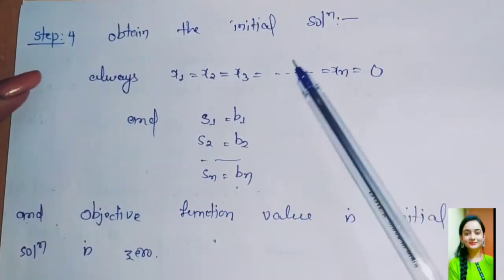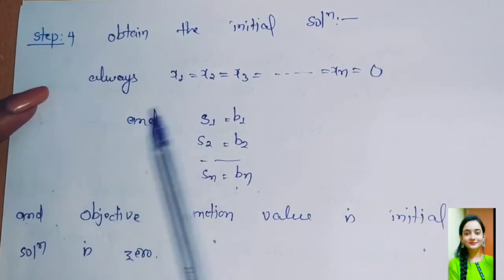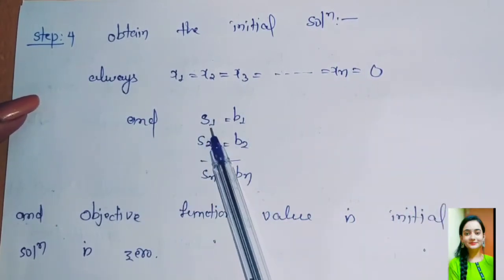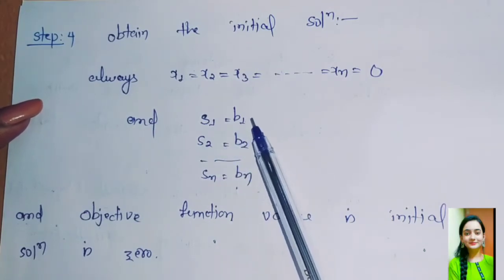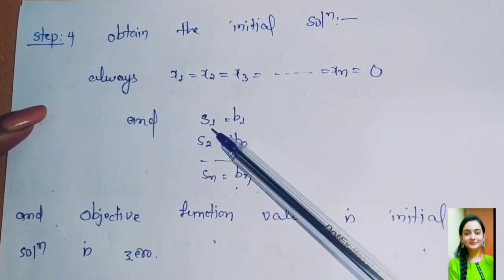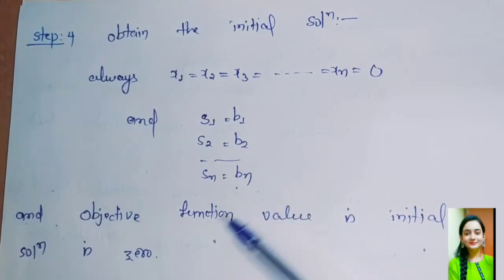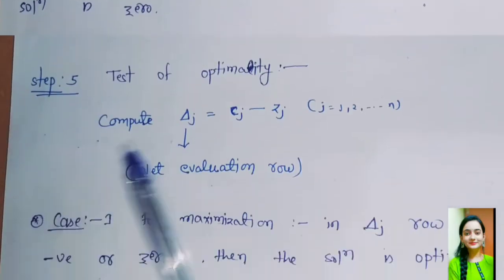Step 4: Finding an initial solution. It is always: non-basic variable = 0 and basic variable equals right-hand side of the constraints, that is s1 = b1, s2 = b2, up to sn = bn, and objective function value for initial solution is 0.